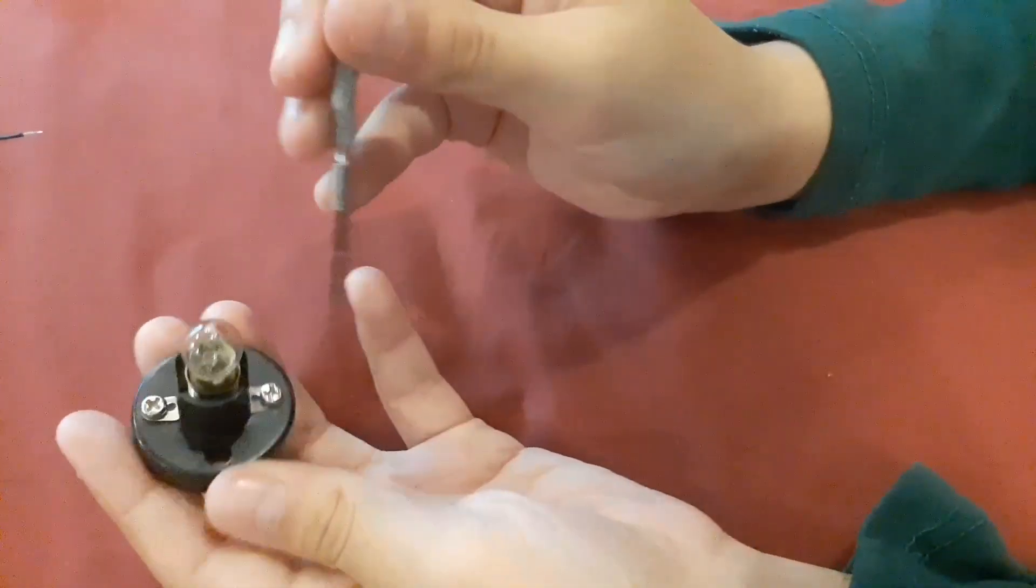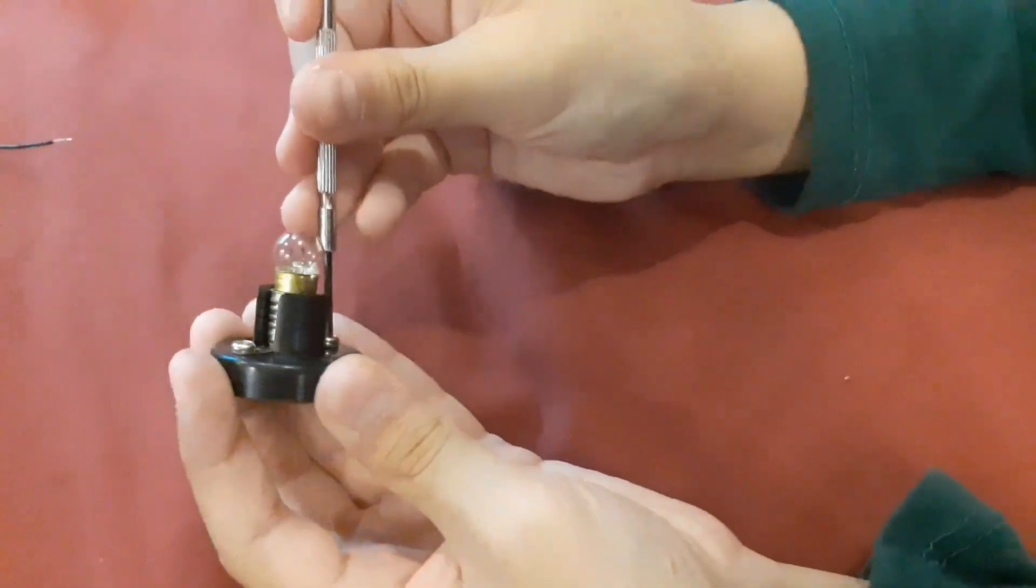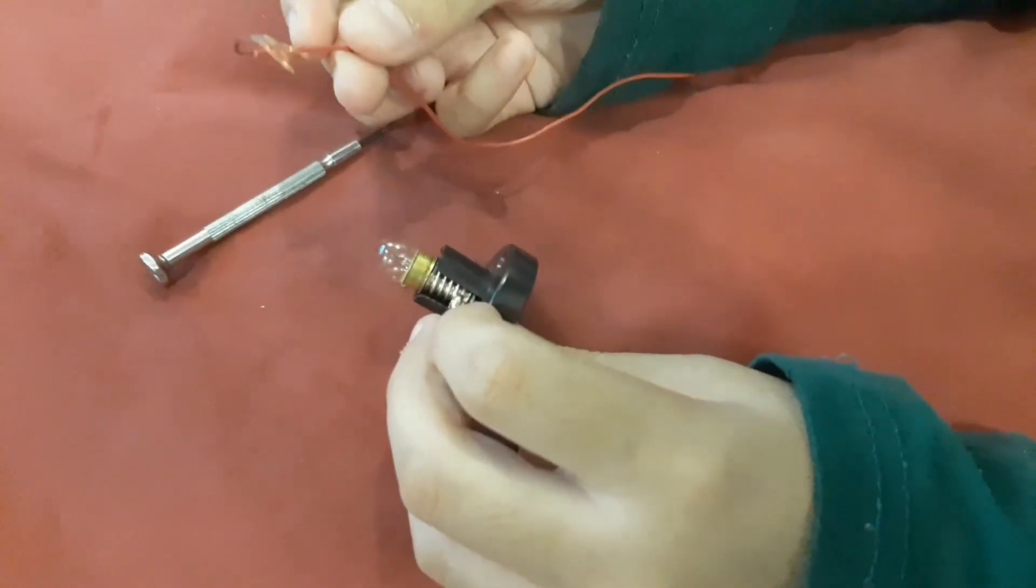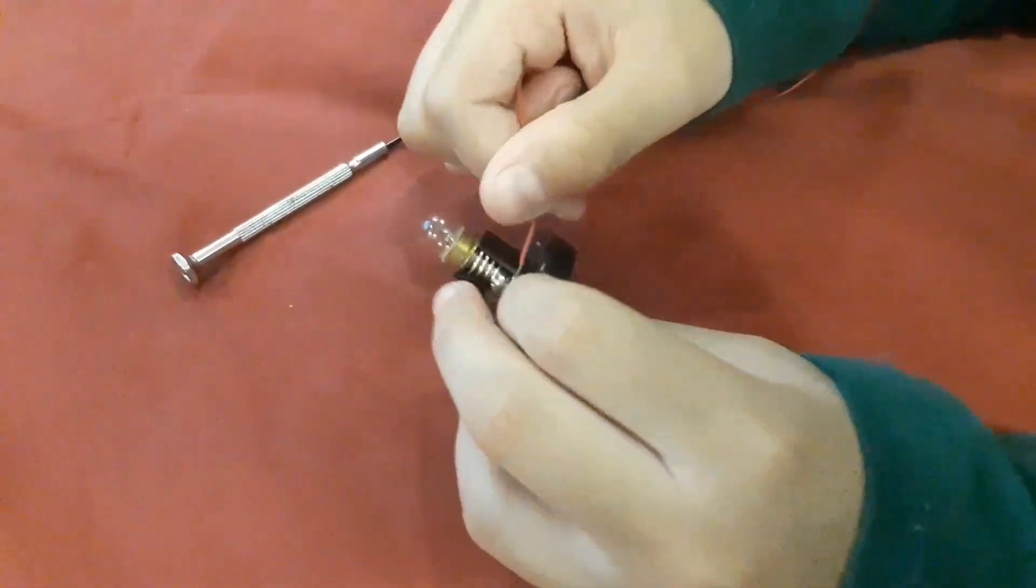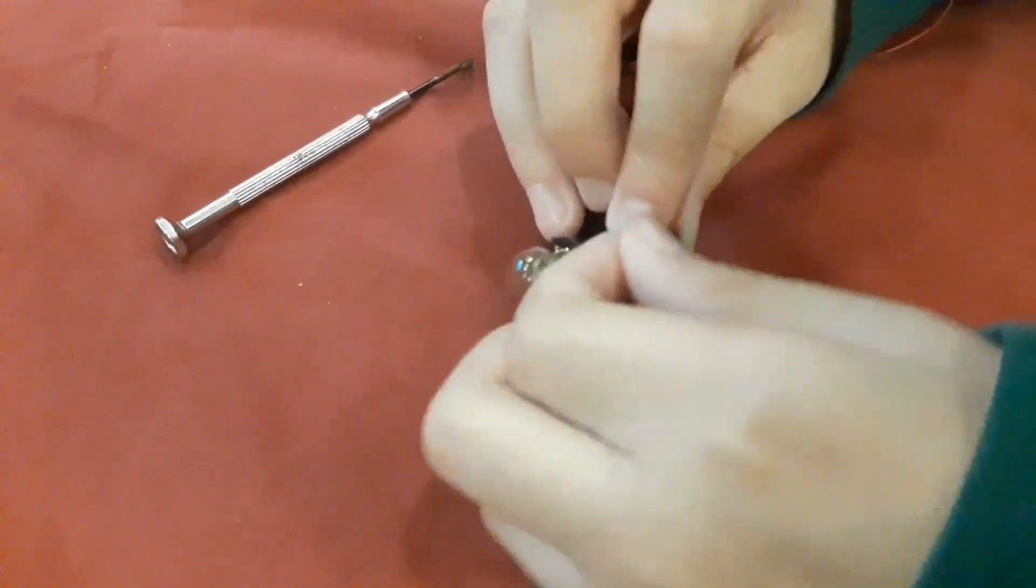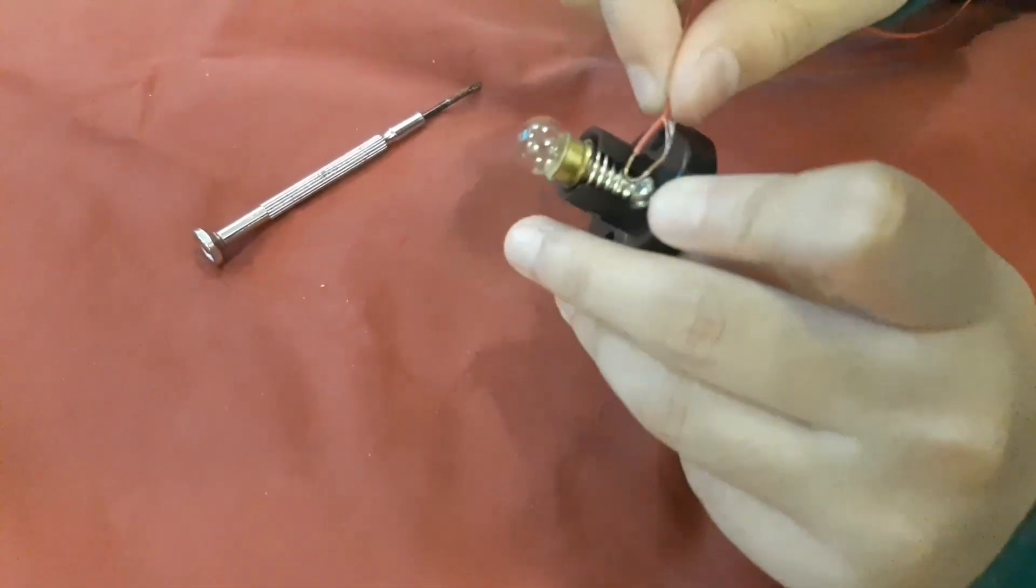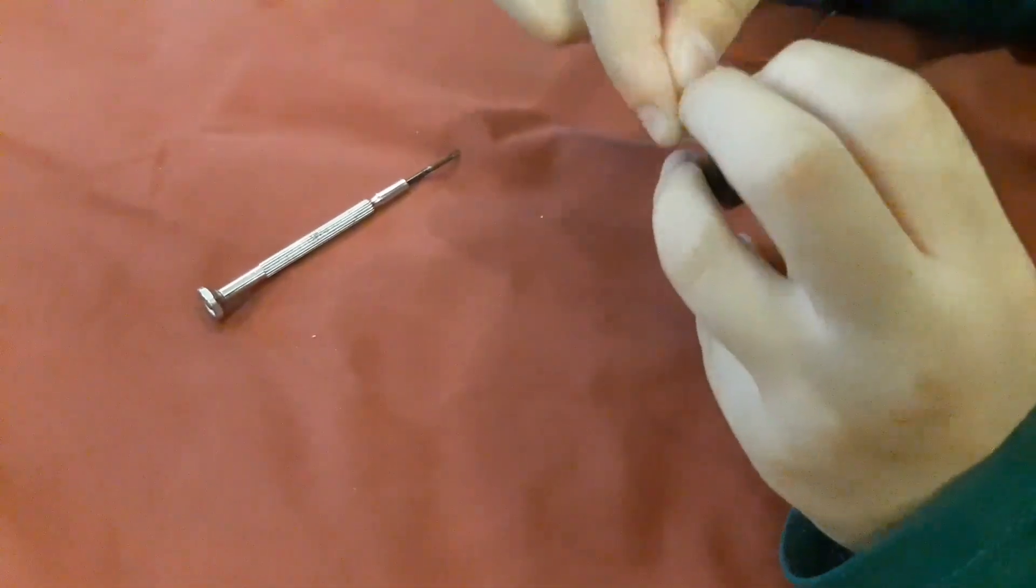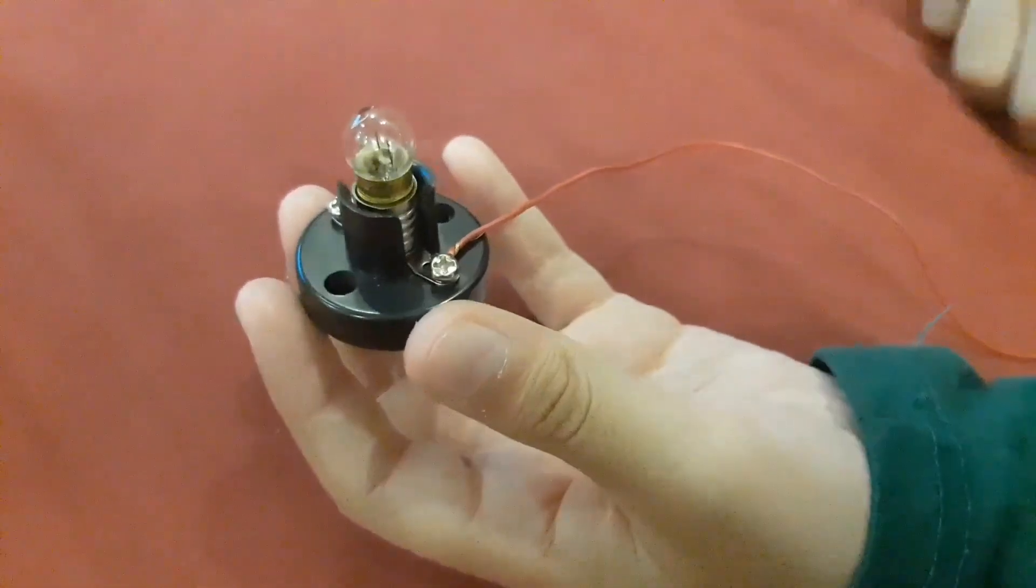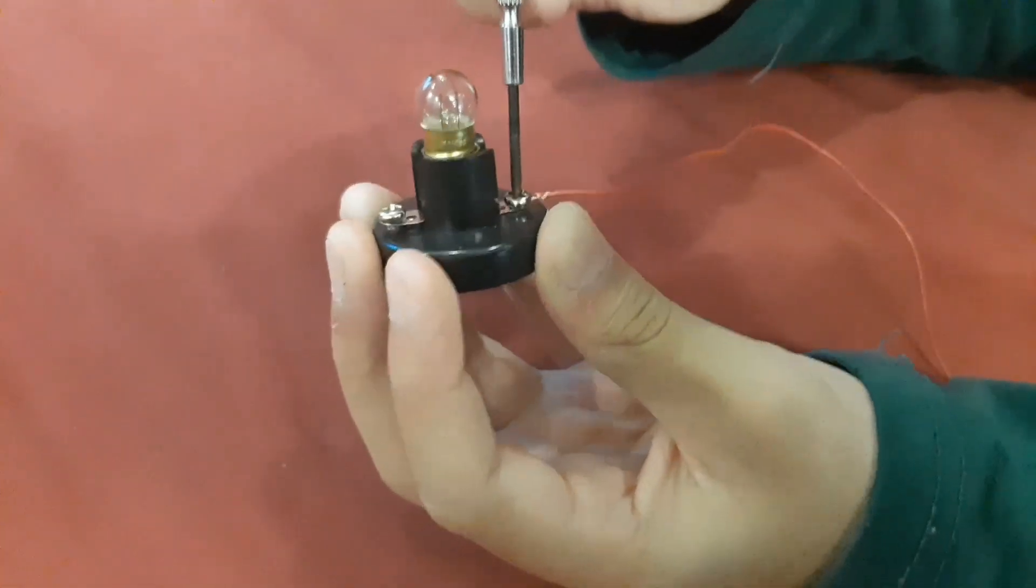All right guys, so only for the bulb and platform you need to detach these screws with a screwdriver. Make sure that it fits. Now what we need to do is take a red wire, and we are going to be tangling it or tightening it right around this screw. What you would want to do is make a hook like this, take this through and just do it like that and just close it like this.